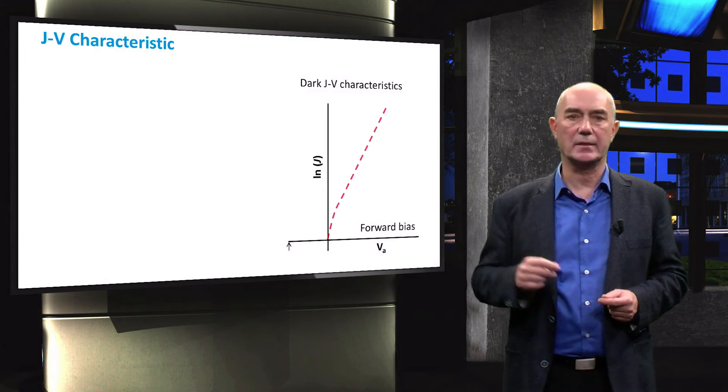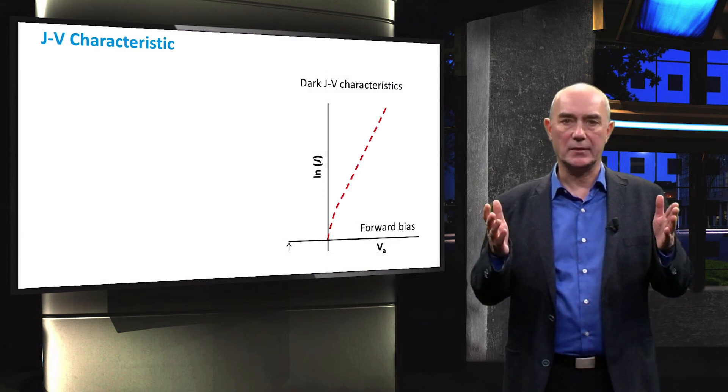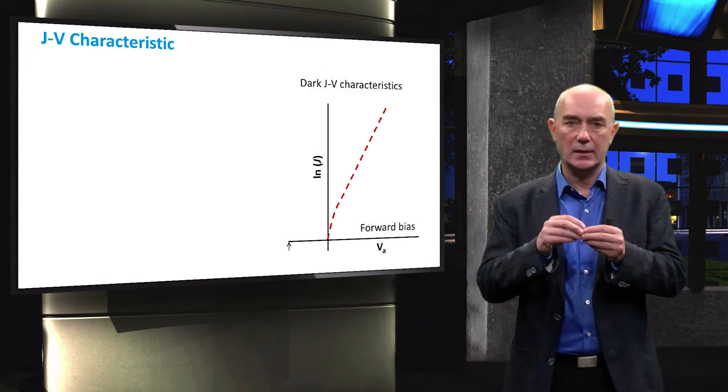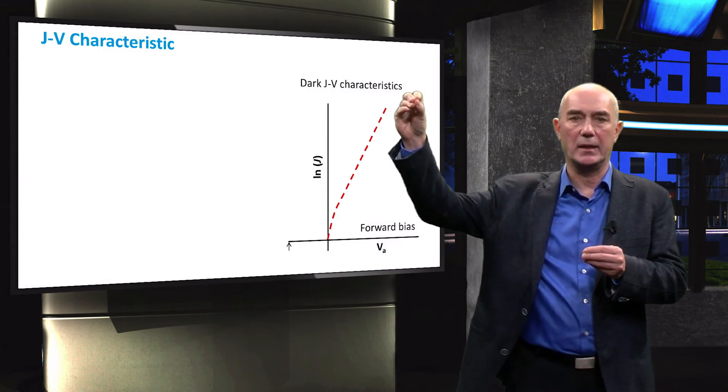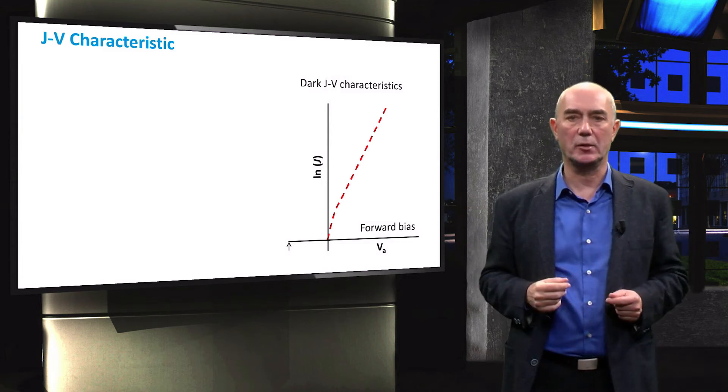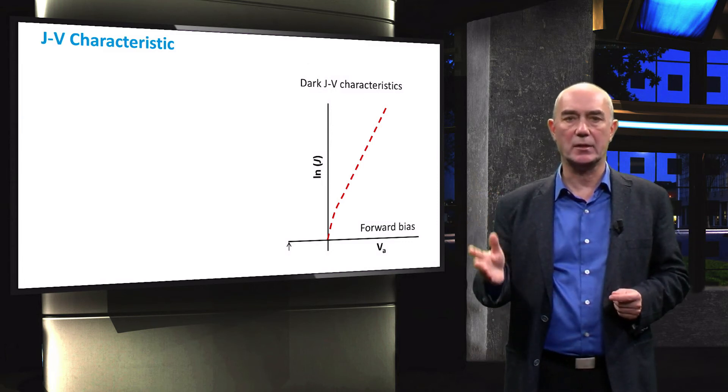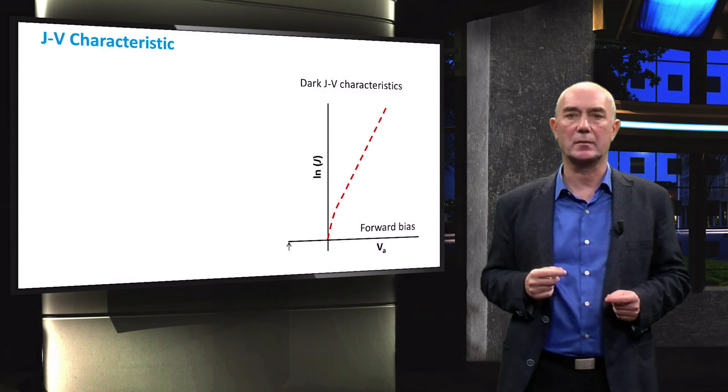Let's plot the current density. We can see that the current density exponentially increases as we apply a forward bias. It looks fairly linear in this plot, but that is because this is a semi-logarithmic plot.